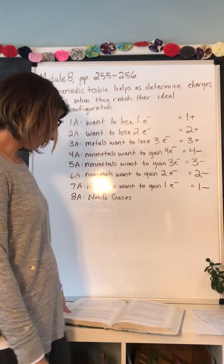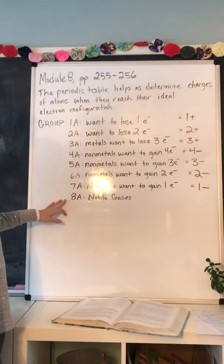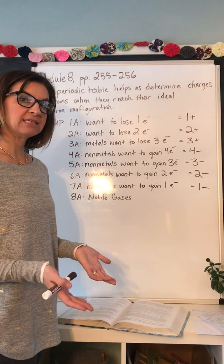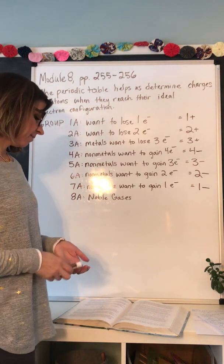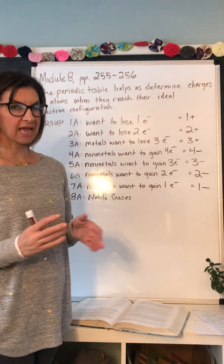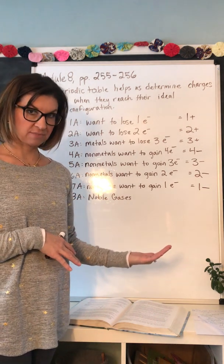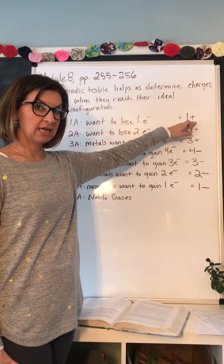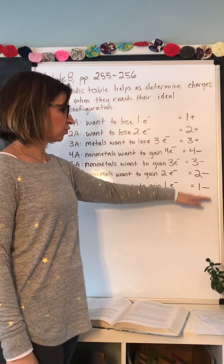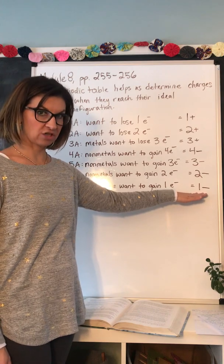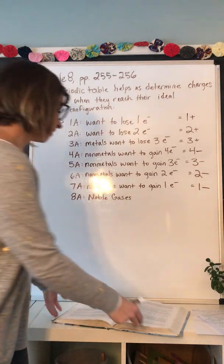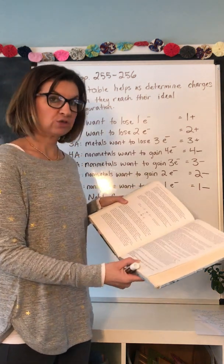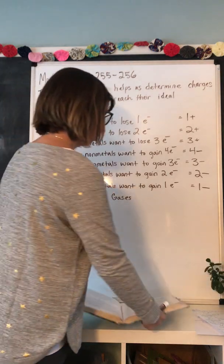All this information can be found on page 255. Once you have determined the charges that atoms will take on at their ideal electron configuration, you can determine how those atoms are going to bond to other atoms to form compounds. An atom with a 1+ charge is going to be attracted to atoms that have a negative charge. On the bottom of page 255 are some rules for determining chemical formulas between two different types of atoms — we're going to write those rules down.